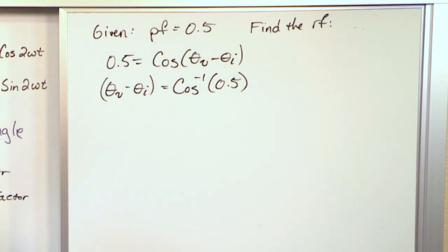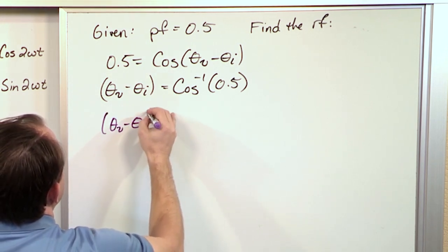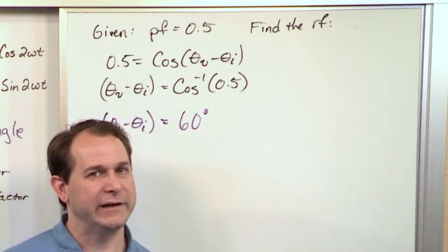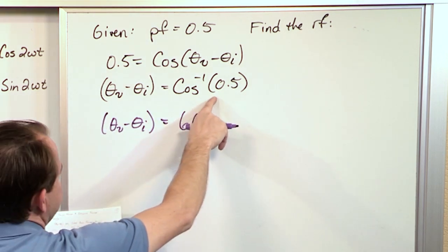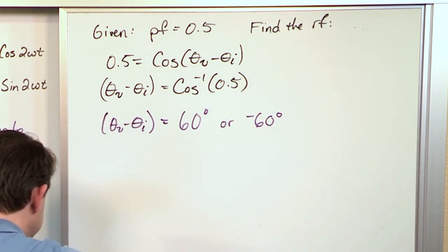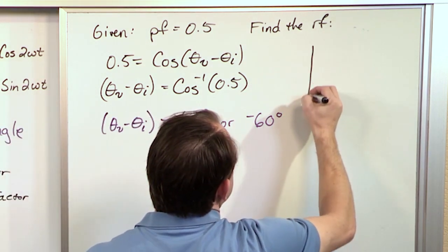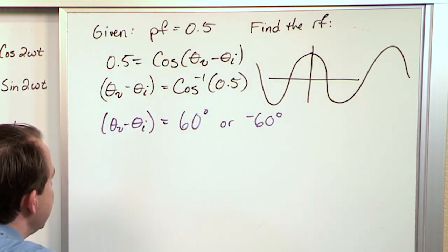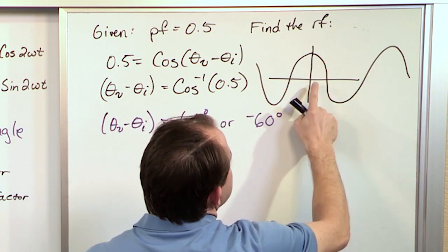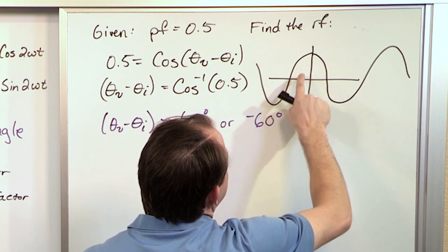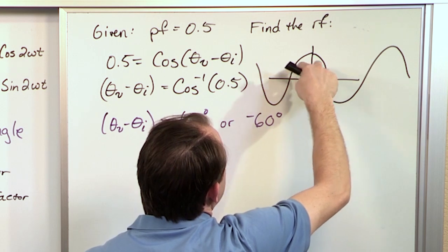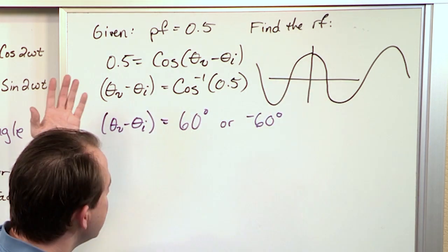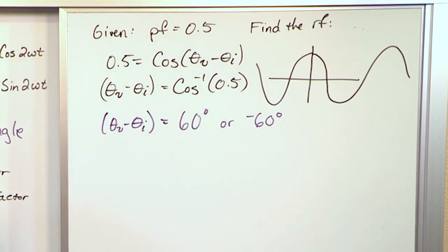You put that in your calculator and theta V minus theta I equals 60 degrees. But that's not the only answer. If you look at the unit circle, there's another valid angle — it can be 60 degrees or negative 60 degrees. The cosine is an even function; it's symmetrical, so if the cosine of the angle is 0.5, a positive angle and a negative angle both give that value. So the problem is, which one is the real angle?